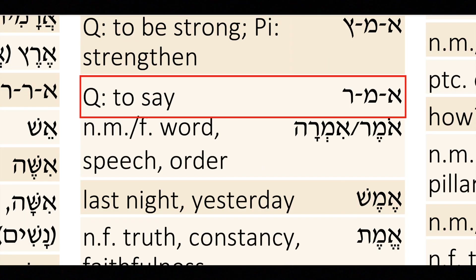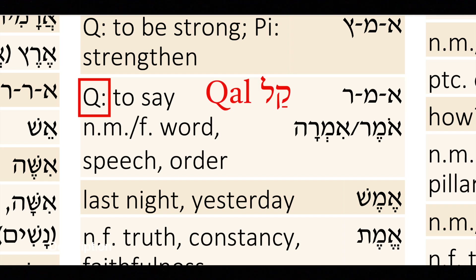To demonstrate how this works, let's return to that verb we looked at — Amar. And if you recall, in the meaning of that verb we saw a Q, which stood for the Qal, the Qal stem.